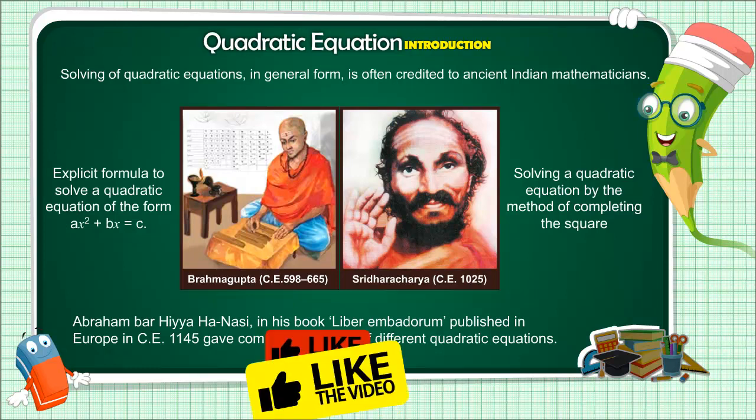Abraham Bar Hiya HaNasi, in his book Liber Mbadorum, published in Europe in Common Era 1145, gave complete solutions of different quadratic equations.